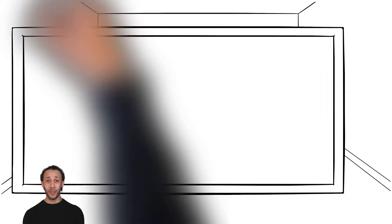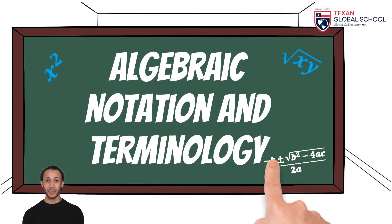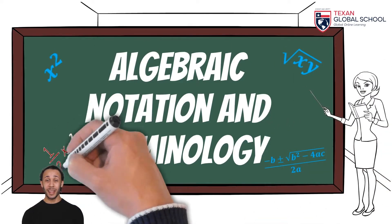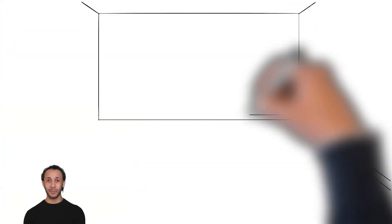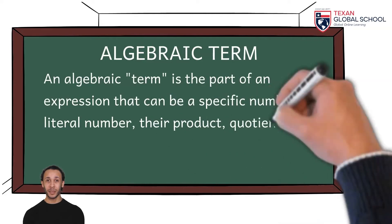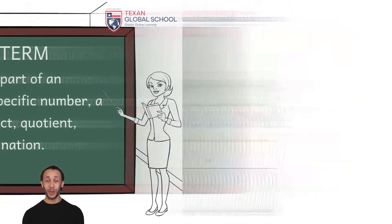It is crucial to define and understand the algebraic notation and terminology. These concepts are the stepping stones for further analysis. The first concept will be the algebraic term. An algebraic term is the part of an expression that can be a specific number, a literal number, product, quotient, root extraction, or a combination.